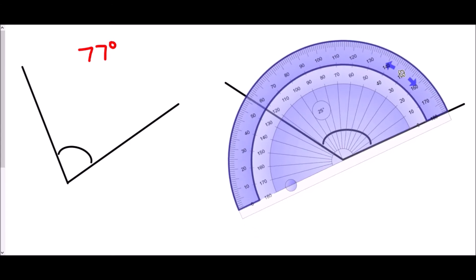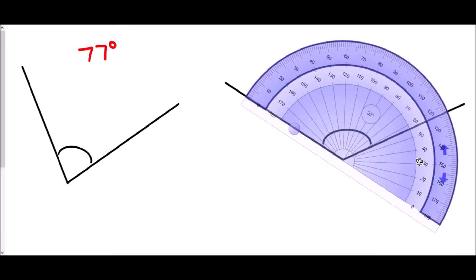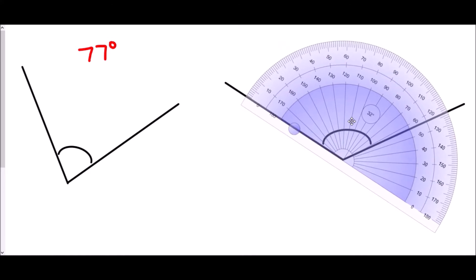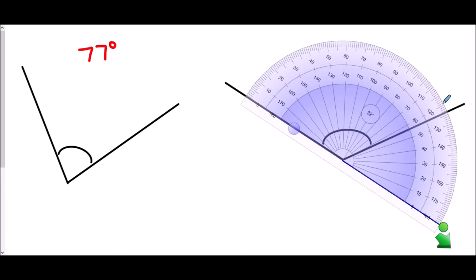Let's try that again for this angle. I want to rotate the protractor so it is lined up, and I can do it from either side. The straight line is in line with one side, and then I move the center to the corner of the angle. This time we are dealing with an obtuse angle — it has gone beyond 90 degrees. The zero is on the outside numbers, so we use the outside numbers. I can get up to 120, then count along a little further: 120, 121, 122, 123 degrees — that is the size of my second angle.